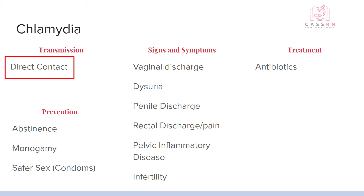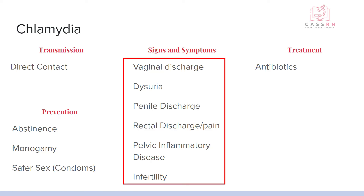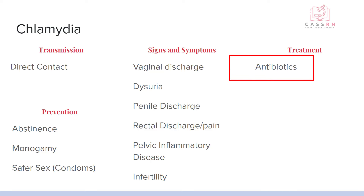Chlamydia is direct contact — same prevention: abstinence, monogamy, condoms. Signs and symptoms include vaginal discharge, dysuria, penile discharge, and rectal discharge, because you can get it in the rectum as well. It can also cause pelvic inflammatory disease and infertility. For women in particular it's very hard to know if they have STDs because the entire reproductive system is internal, so it commonly goes untreated, causing PID and eventually infertility from scarring. Treatment is antibiotics for you and your sexual partners.